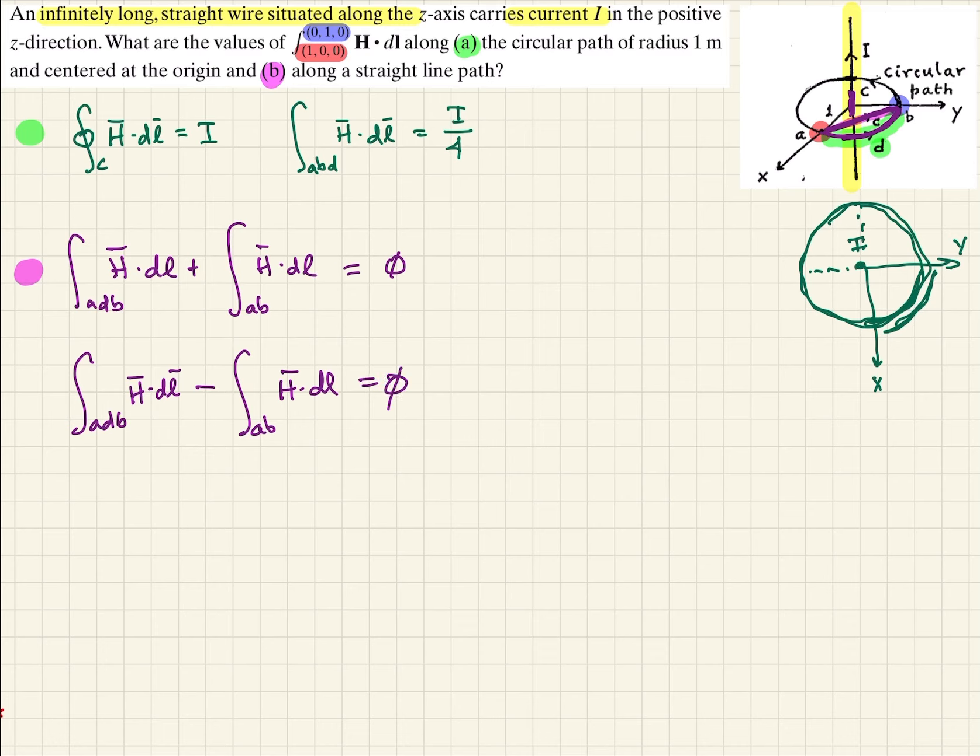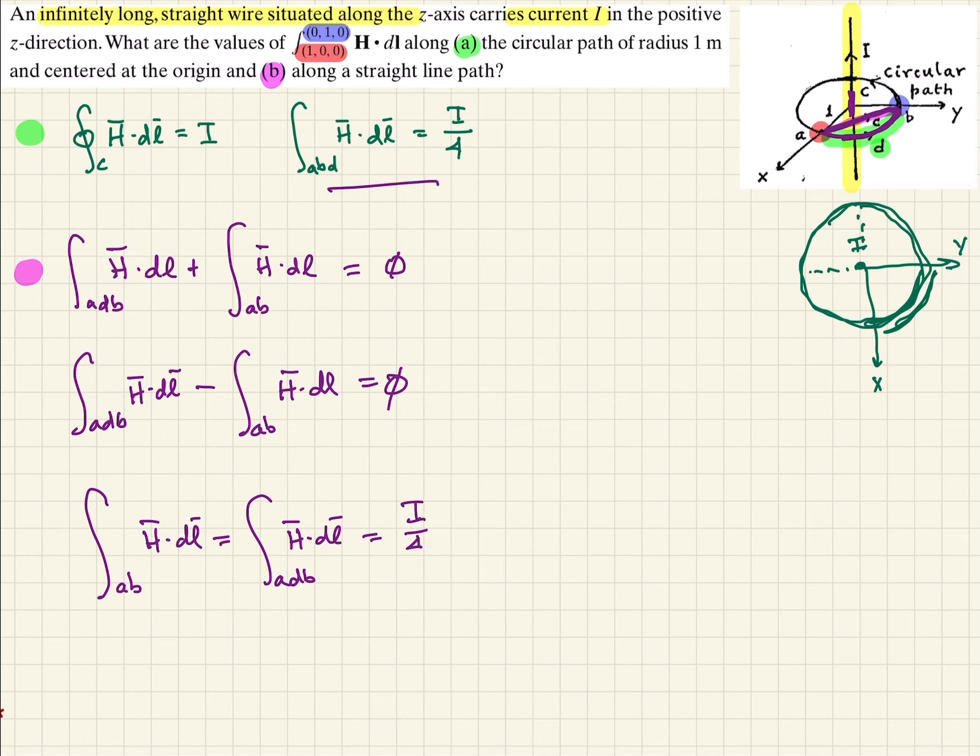Taking it one step further, what that's going to tell us is the integral along the straight path A to B, H dot DL, has got to be equal to the integral of A, D, B, H dot DL, which we solved for up here. It's going to be I over 4.